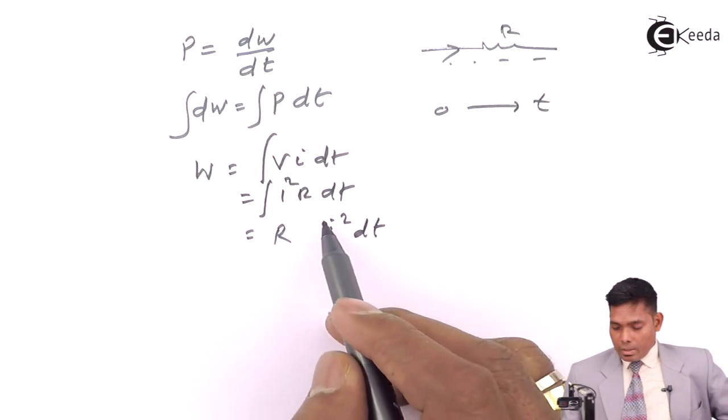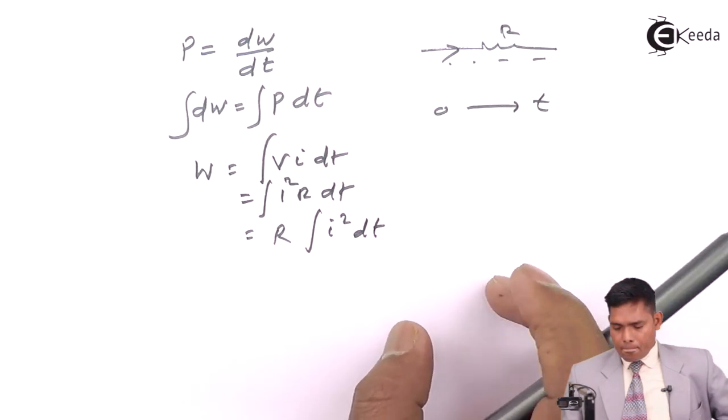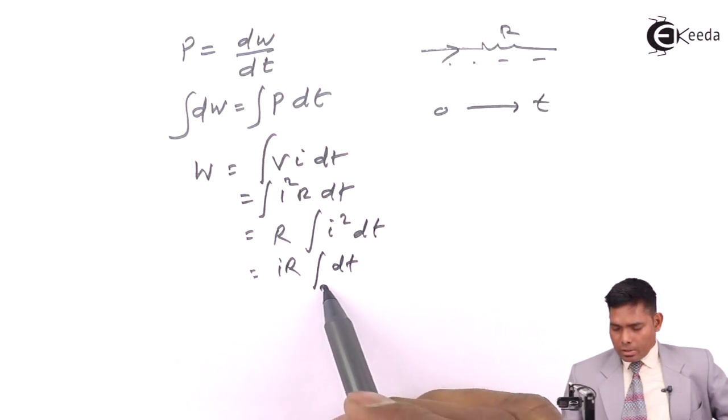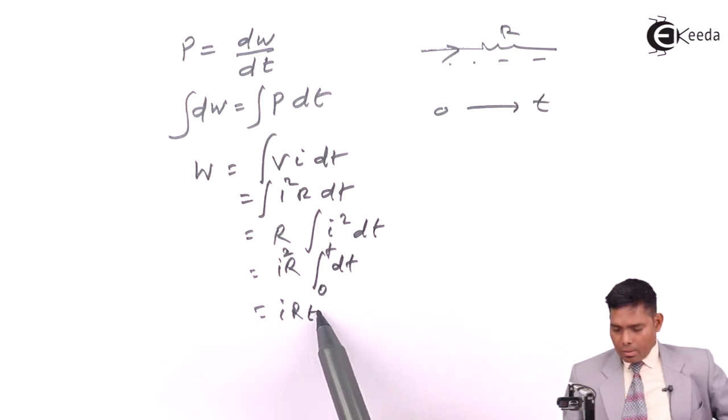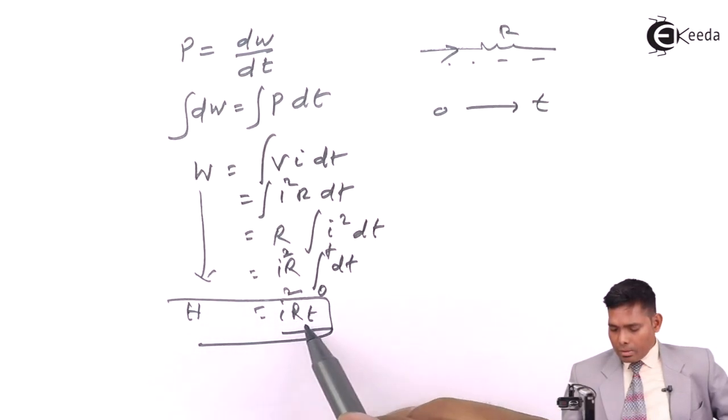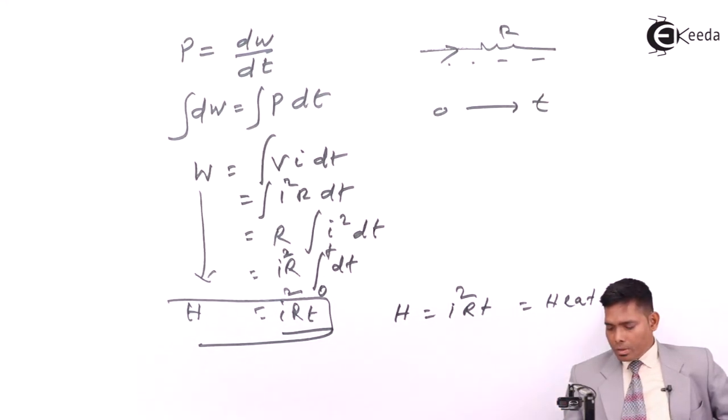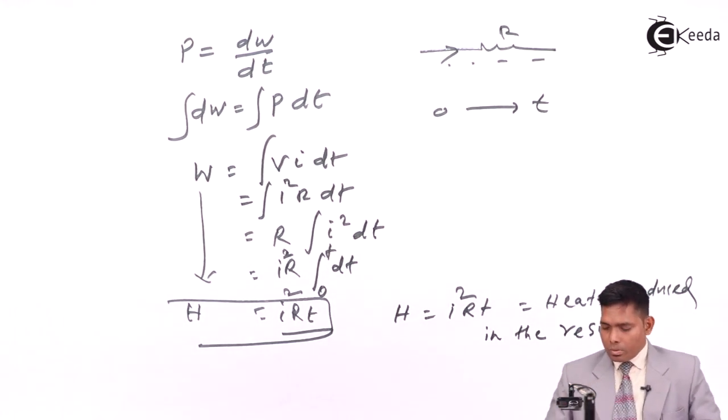If you write I squared R dt integration, R is constant so I squared dt integration—the constant can come out. Because the current is constant, this is I squared R into T. This is nothing but I squared R T. This is H, the heat produced in the resistor.